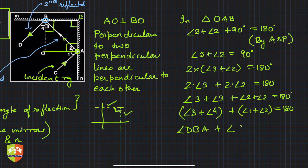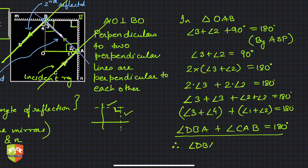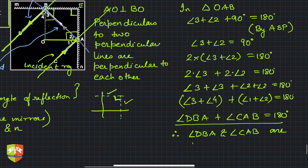Angle DBA + angle CAB = 180°. These are the co-interior angles of lines BD and CA, where AB is the transversal. BD and CA are the two lines, and AB is the transversal forming these co-interior angles.